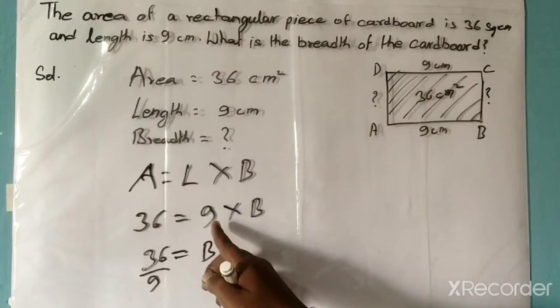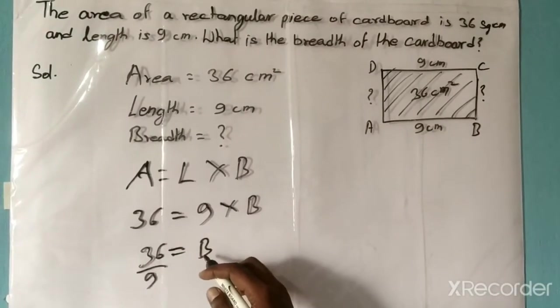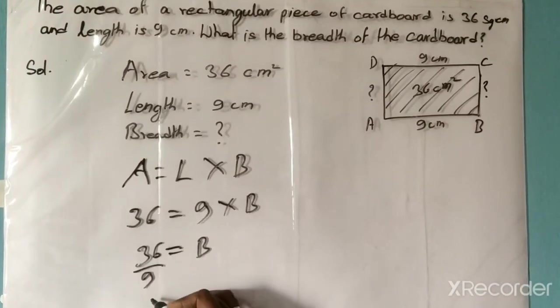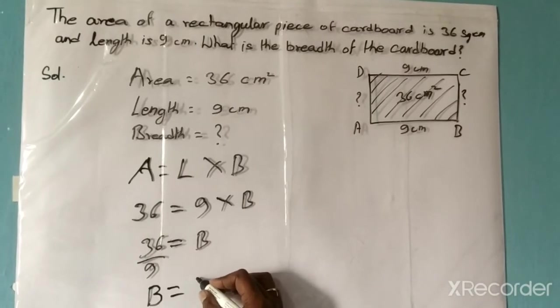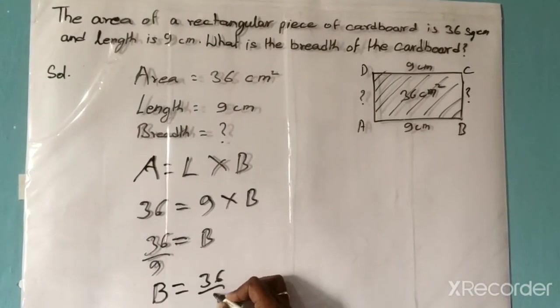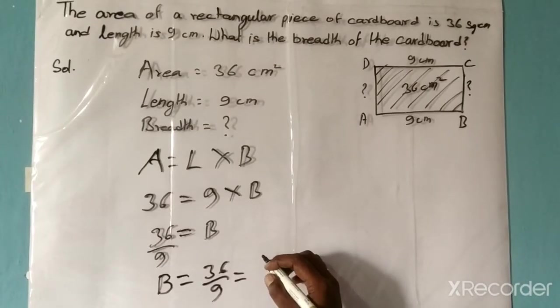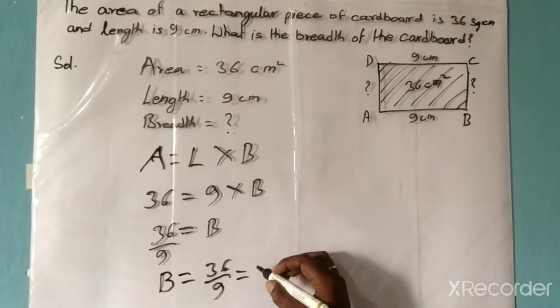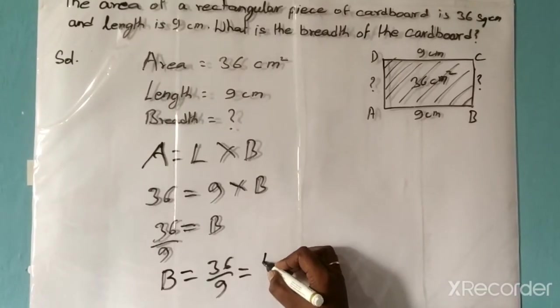When it is multiplication here, it will go to the other side of the equation, then it becomes division. So B equals 36 by 9. That is equal to, 9 times 1 is 9, 9 times 4 is 36, so B equals 4.